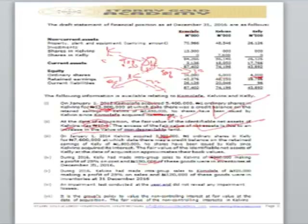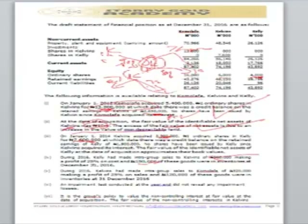In converting to a flat group structure, Commonwealth Fair has 90% in Kelvin and 72% in Kelly. Regarding the purchase consideration: Kelvin paid 7.6 million for Kelly's shares, and Commonwealth Fair is responsible for 90% of that amount. The balance of 10% of the purchase consideration is contributed by the NCI of Kelvin. That is what you do in Note 3.